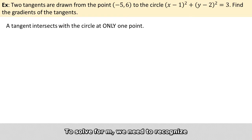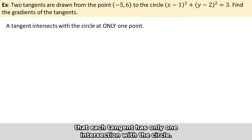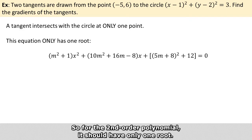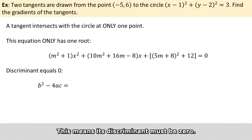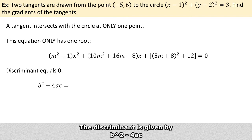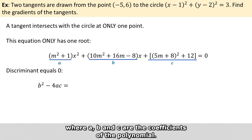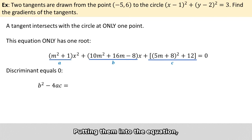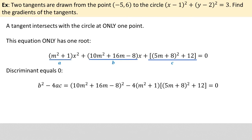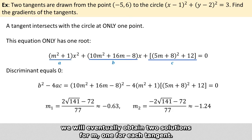To solve for m, we need to recognize that each tangent has only one intersection with the circle. So for the second-order polynomial, it should have only one root. This means its discriminant must be zero. The discriminant is given by b squared minus 4ac, where a, b, and c are the coefficients in the polynomial. Putting them into the equation, we will eventually obtain two solutions for m, one for each tangent.